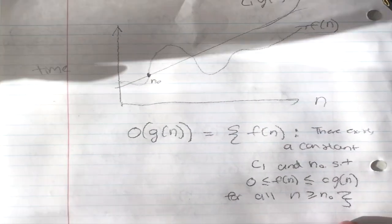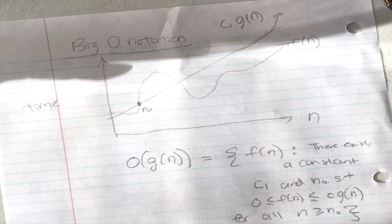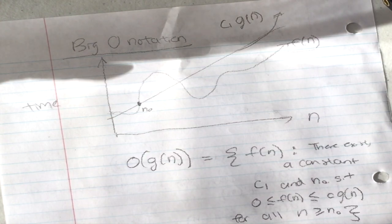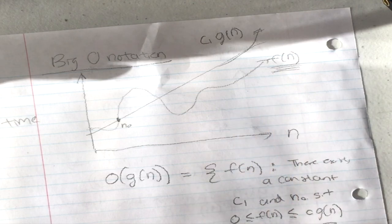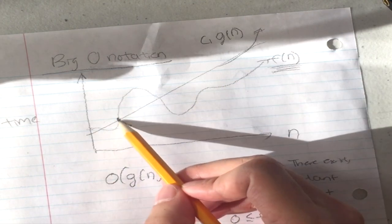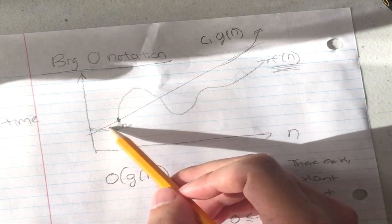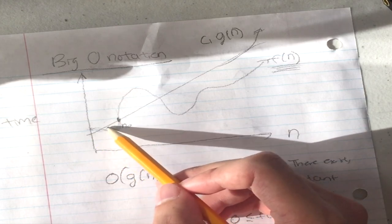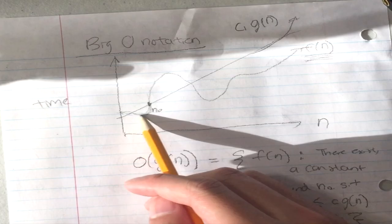Big-O notation: O(g(n)) equals f(n) if there exists a constant c and n₀ such that 0 ≤ f(n) ≤ c·g(n) for all n ≥ n₀. When we say something is Big-O of n, it means there exists a constant multiplied by n that bounds your algorithm's time function from above. Big-O is the upper bound limit. Initially your Big-O function might not appear more efficient for small values, because the rate of increase matters.